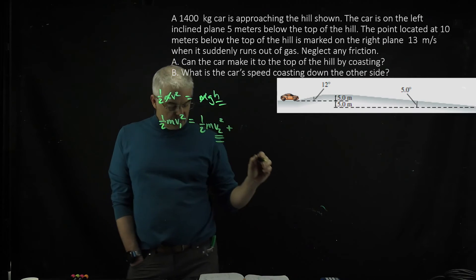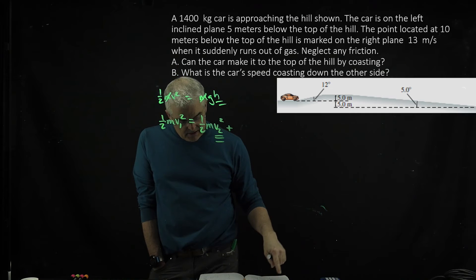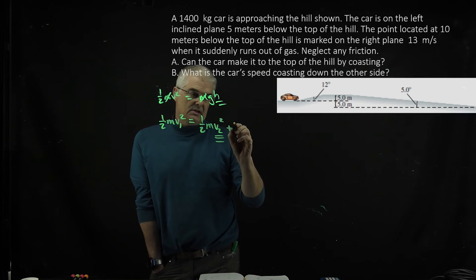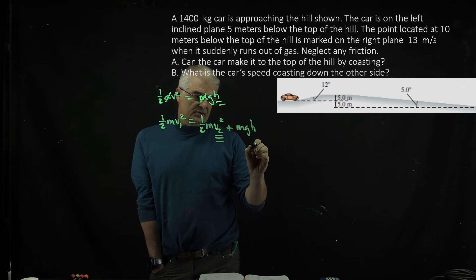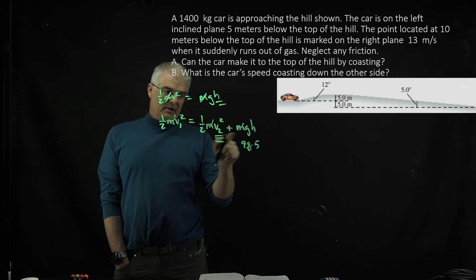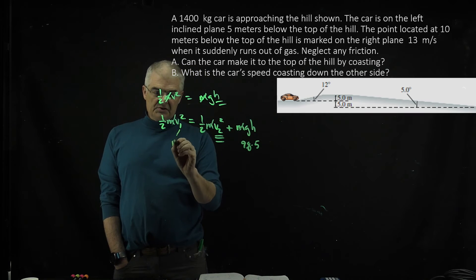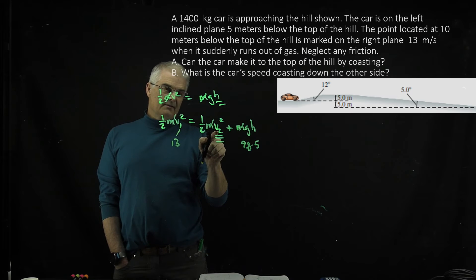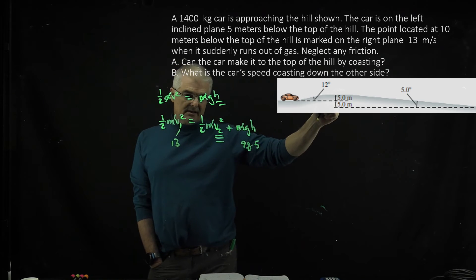But also you've got some energy of mgh - now he's up five meters. This is five, this is 9.8, all your m's are going to cancel. When you do the math right here, you're solving for v2. We know this is 13, and you're trying to find what his velocity is at the top of the hill.